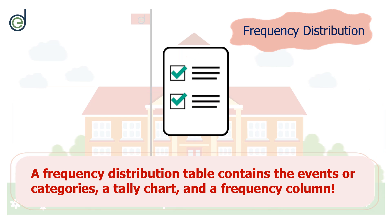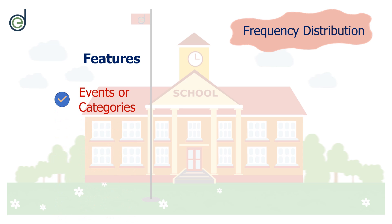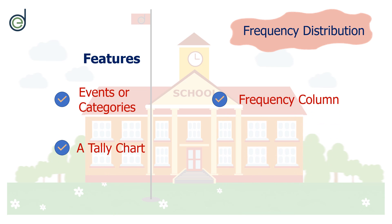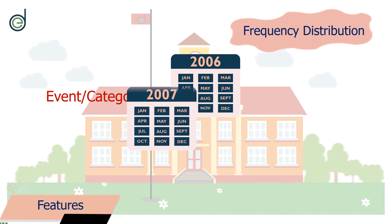A frequency distribution table contains the events or categories, a tally chart, and a frequency column — these are its three features. The main feature is the event or category whose occurrence you are trying to analyze. In our example, the birth year of the students is the category.